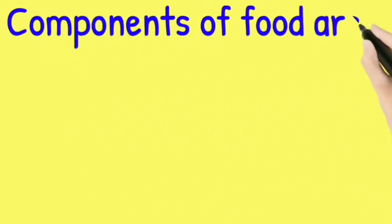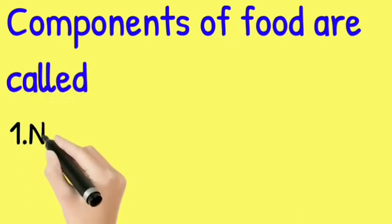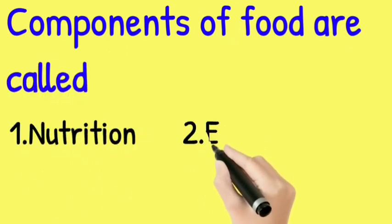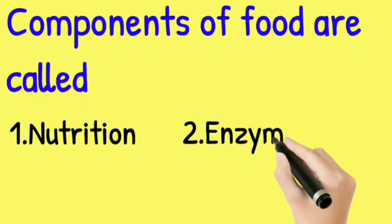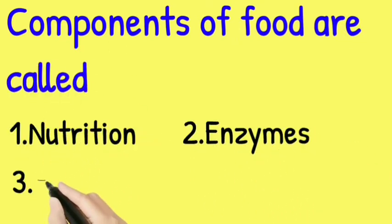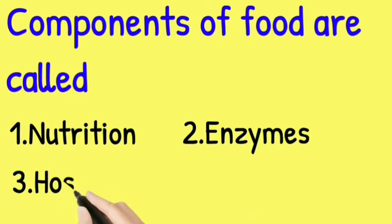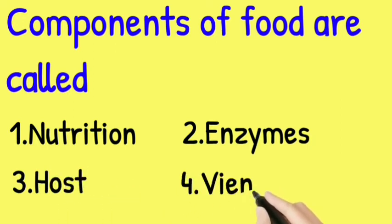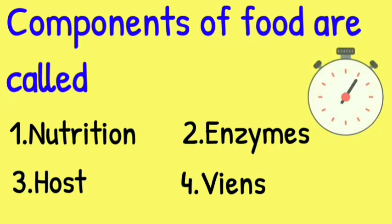Components of food are called — the options are: Nutrients, Enzymes, Host, and Veins. Your time starts now!